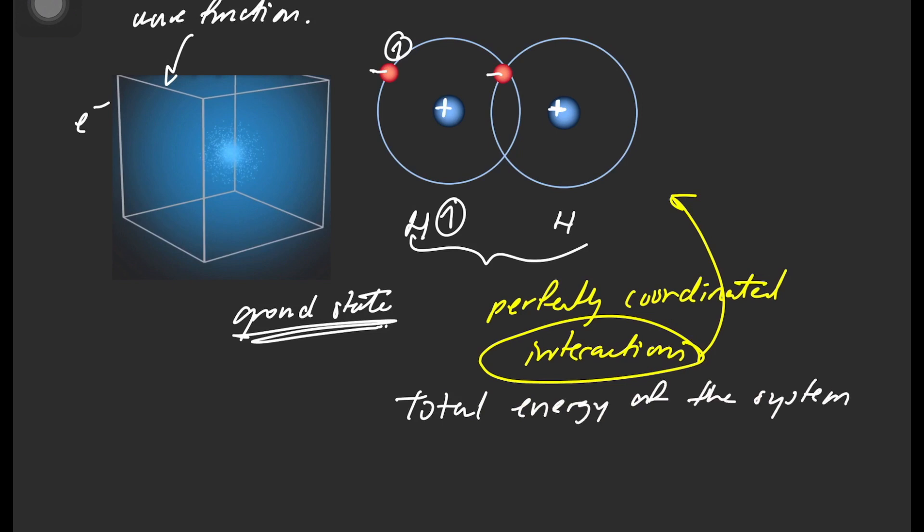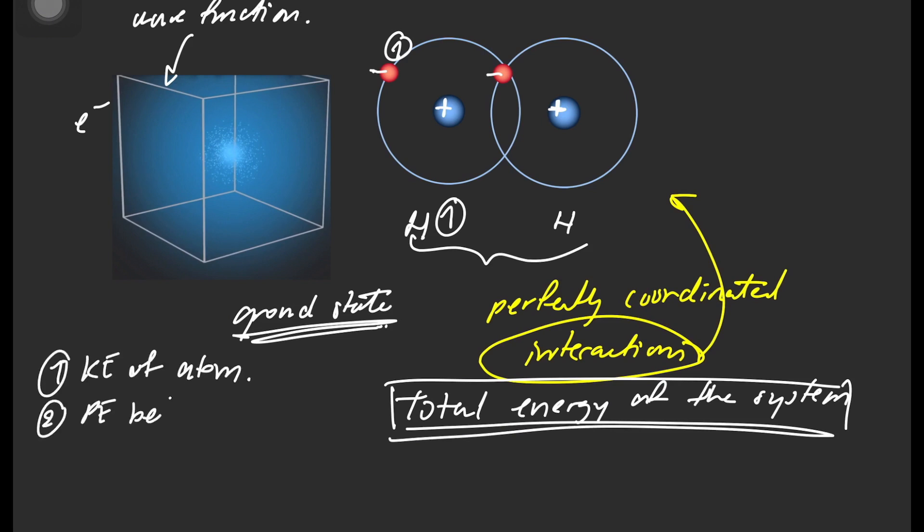To calculate the total energy of the system, you take count of: 1, the kinetic energy of each atom; 2, the potential energy between the two protons, the potential energy between the two electrons, and the potential energy between each electron and proton.